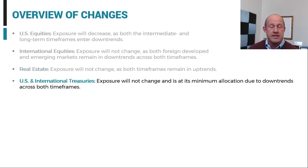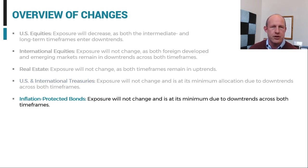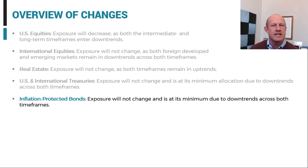Fixed income remains weak as rates have steadily increased with the expectation — not the prediction — that there is more to come. Fixed income will remain at minimum allocations due to downtrends across timeframes, as will inflation-protected securities. That's been the case for about two or three months, even as inflation in non-financial commodity assets has continued to rise, hitting new all-time highs, while financial assets reflected by TIPS have remained weak.